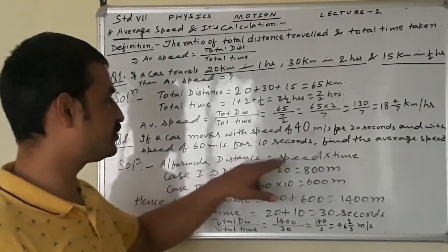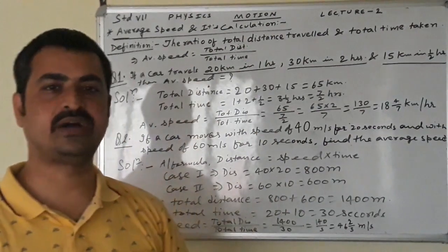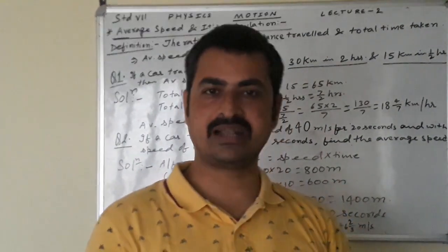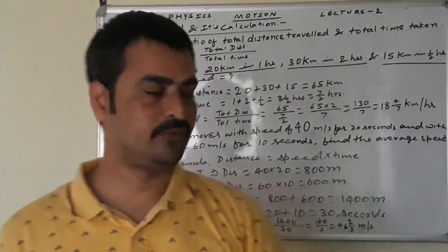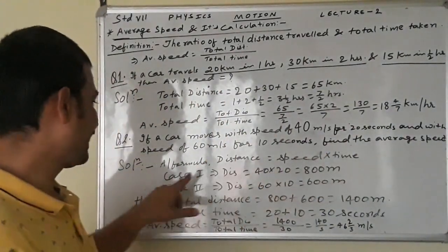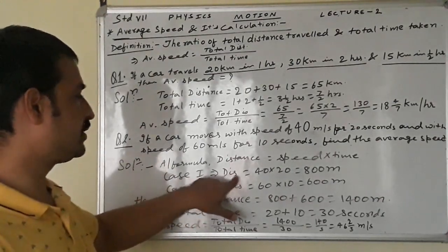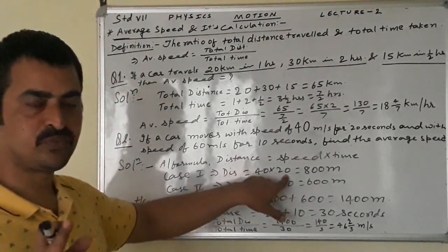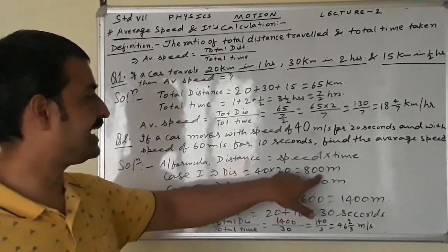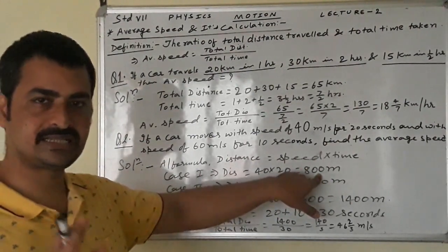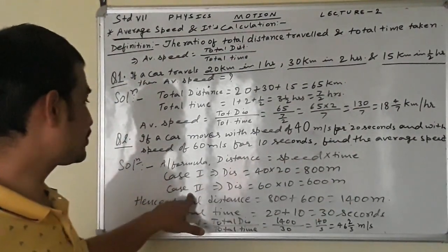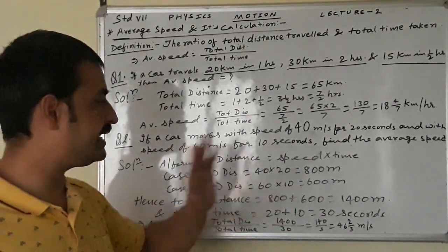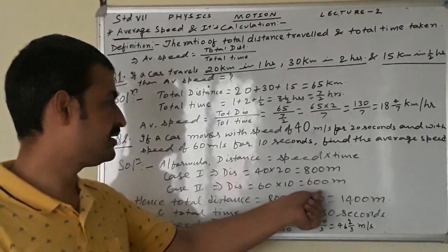According to the formula, distance equals speed into time. In the previous lecture it was explained that speed equals distance by time, so another form derived from that formula is distance equals speed into time. Case 1: distance equals 40 into 20 — 40 meter per second is speed and 20 seconds is time — giving 800 meters. Case 2: distance equals 60 into 10 — 60 meter per second and 10 seconds — giving 600 meters.